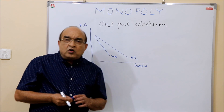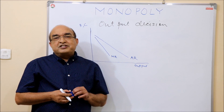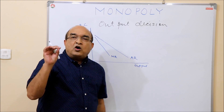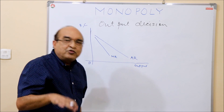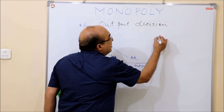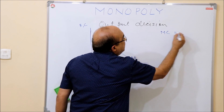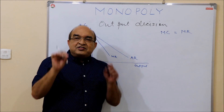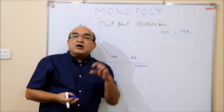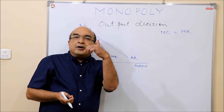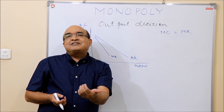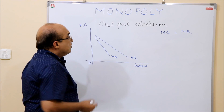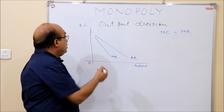When we were discussing perfect competition, I explained that the output level for a firm in all kinds of markets must be where marginal cost equals marginal revenue. That means the last unit produced costs the firm the same amount as the revenue that last unit brings.